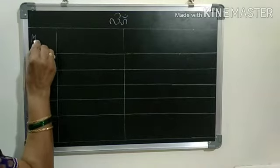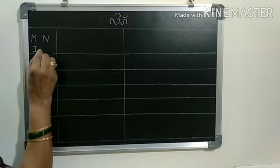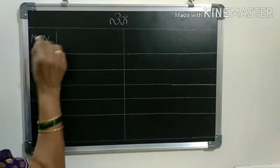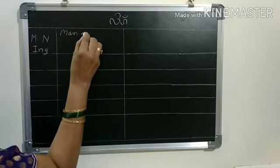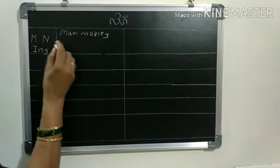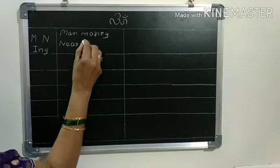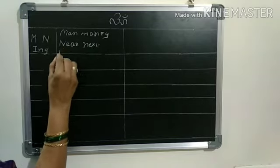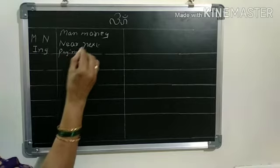M, N, ING. These three strokes we will practice together. M for example, man, money. Then N for example, near, next. ING for example, paying, lying.